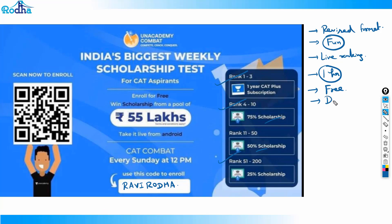So ask you for invite code, put Ravi Roda, and the link I'll put in description. Enroll from there, and do give this every Sunday. Do give this at 12 PM. It's on every Sunday. So every Sunday give this at 12 PM. Thank you.